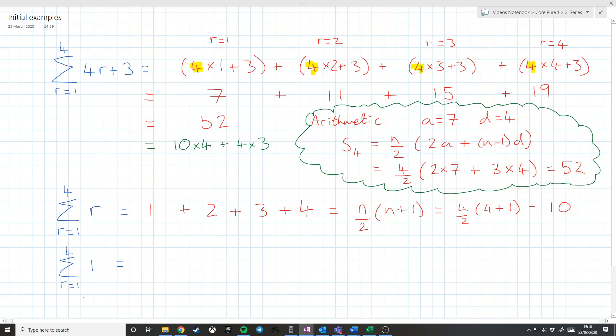This one can sometimes catch people out because people are kind of over complicated. But this really is add up from r equals 1 to 4 the number 1. So when r equals 1, we get 1. When r equals 2, we still get 1. When r equals 3, we get 1. And when r equals 4, we get 1. So for this, we get 4.